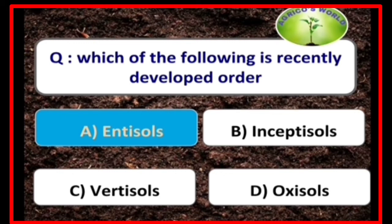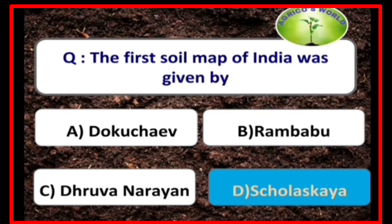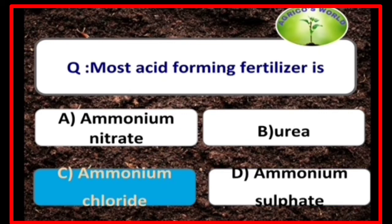Entisol is the recently developed order. The dominant mineral in the earth's crust is feldspar. The first soil map of India was given by Sibirtsev/Skolaskaya.